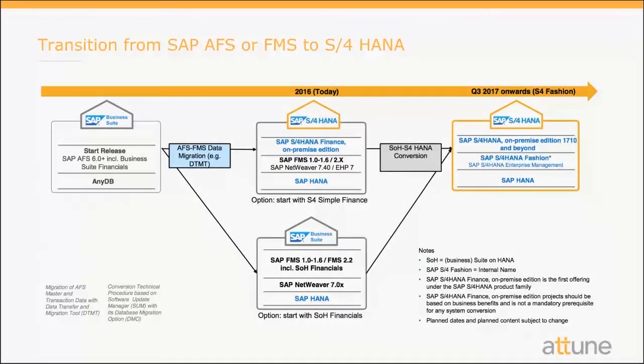Let's take the case of a customer who is actually using SAP AFS today. You have to be on a certain AFS release to do a one-step migration. The start release for AFS is SAP AFS 6.0, and you can be on any database. SAP AFS doesn't run on HANA as of now, so the first step for an AFS customer is to convert or move into an SAP FMS solution.